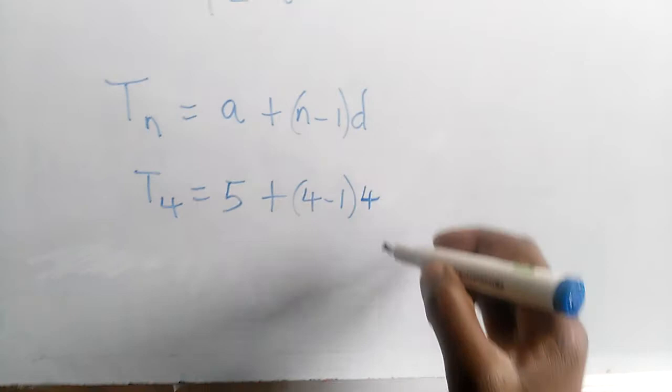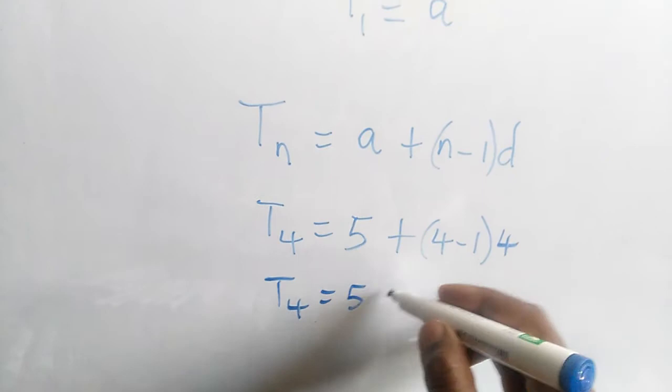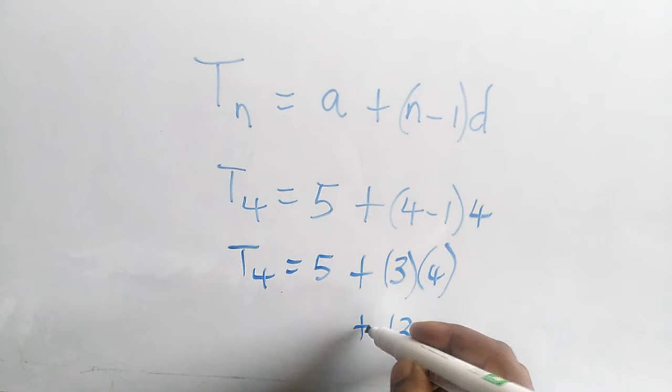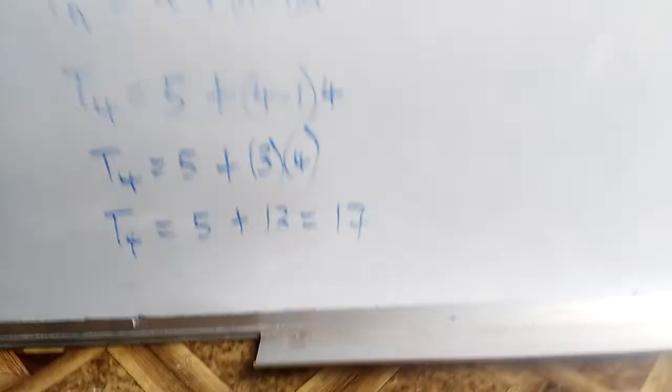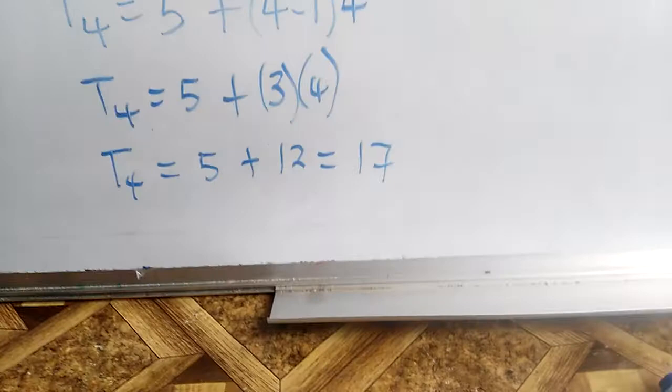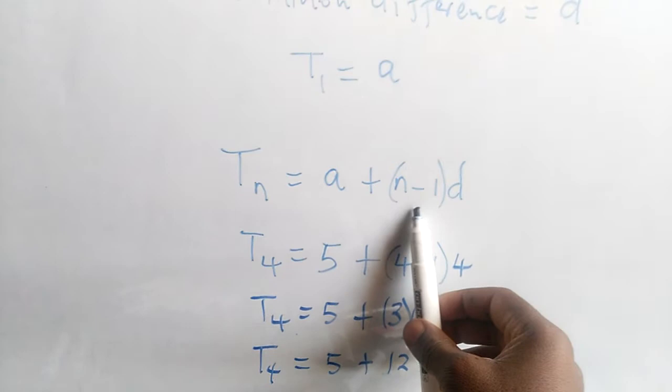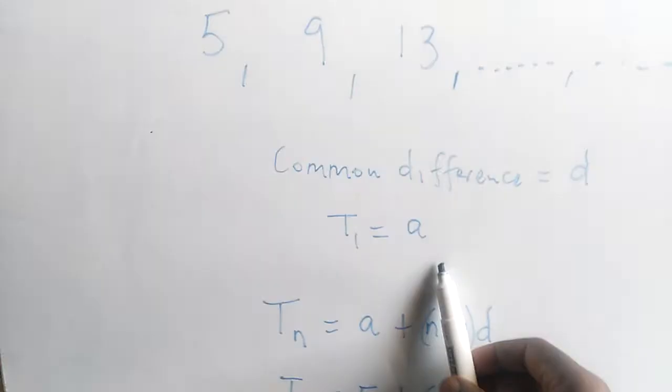Let's get the 4th term. The formula is: Tn = A + (n − 1) × d — the nth term formula of an arithmetic progression, or A.P. So term number 4 equals first number 5, plus (4 take away 1) multiplied by the common difference of 4. Therefore, term number 4 equals 5 plus 3 times 4. Multiplication comes first: 3 × 4 = 12. Then we add: term number 4 = 17.